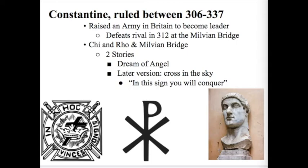There are two stories about Constantine and the Milvian Bridge. In the first, on the night before battle, he has a dream of an angel who says to paint a symbol on his shields — the Chi and the Rho. These are Latin letters: the Chi is the X shape, and the Rho looks like a P but represents an R. Together, Chi-Rho are the first letters of Christ in Greek — the 'K' sound. Constantine wakes up, paints the symbol, goes into battle, and wins.